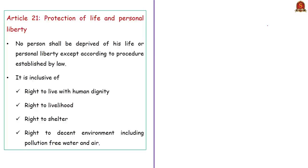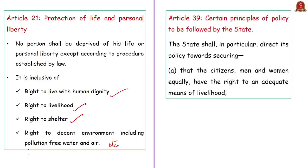Article 21 is a far-reaching right covering many implicit rights like right to live with human dignity, right to livelihood, right to shelter, and right to a decent environment including pollution-free water and air. Article 39, a Directive Principle of State Policy, says that citizens, both men and women, equally have the right to an adequate means of livelihood. This background is required for proper understanding of this op-ed column.